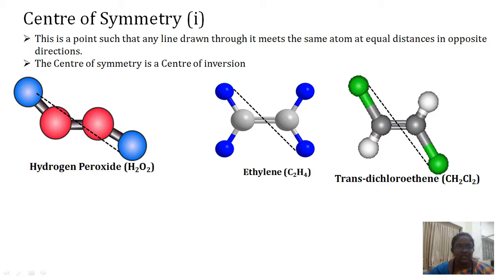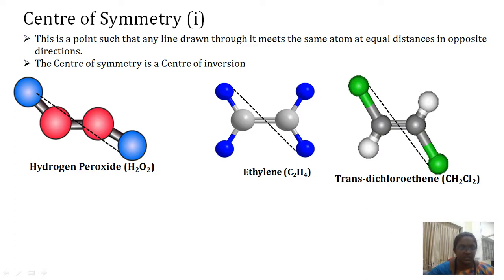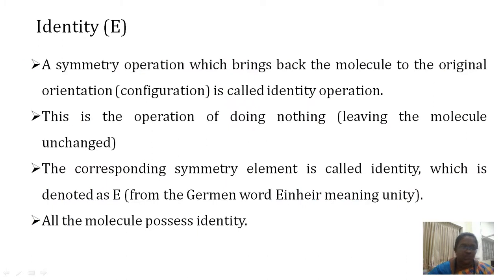The center of symmetry is a point such that any line drawn through it meets the same atom at equal distances but in opposite directions. Hydrogen peroxide, ethylene, and trans-dichloroethylene possess a center of symmetry. This center of symmetry is also called the center of inversion.